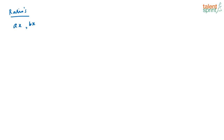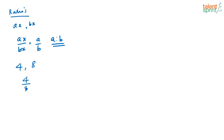Let us discuss about ratios. Basically, ratios are used for comparison of quantities in terms of division. If you have two quantities a·x and b·x, you represent them as a·x by b·x, which equals a by b. So these two numbers are expressed in the ratio a is to b. For example, if you have two numbers 4 and 8, the ratio is 4 by 8. You take out all common factors — 4 into 1 and 4 into 2 — so you are left with 1 by 2. That is how you represent ratios in general.